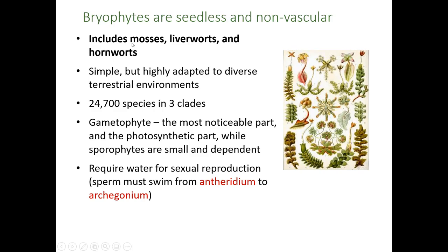The groups that belong to the bryophytes are called the mosses, the liverworts, and the hornworts. Moss is by far the most common bryophyte, and we'll use that as our example. These plants are simple — their anatomy and physiology is not complicated — but that doesn't mean they're not well adapted to their terrestrial environment. We still have on Earth almost 25,000 species in these three groups: mosses, liverworts, and hornworts.